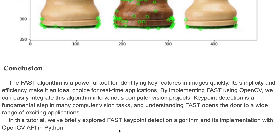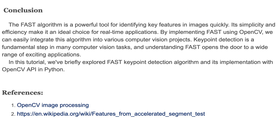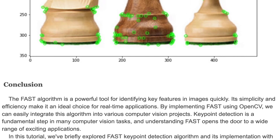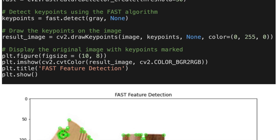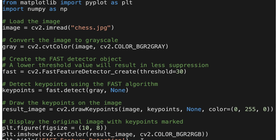That's it for this tutorial. We briefly explored the FAST key point detection algorithm and its implementation with the OpenCV API in Python. The FAST algorithm is a powerful tool for identifying key features in an image quickly — its simplicity and efficiency make it an ideal choice for real-time applications. By implementing FAST using OpenCV, we can easily integrate this algorithm into various computer vision projects. I'll put the source code link below this video. Please visit my website, subscribe, and hit the like button if you liked this video. Thank you for watching and see you next time.